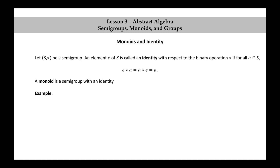Therefore, the set of integers together with this operation ★ is not a monoid. Let's look at another example. Let S be the set of natural numbers and define ★ by A★B = A. Recall that we already showed that the set of natural numbers together with this operation ★ is a non-commutative semigroup.